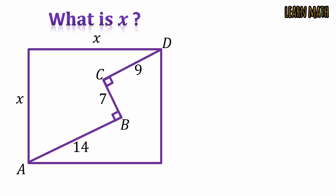In this question we have to find the side of the square that is x. Extend AB to the point E where BE is equal to CD that is 9. Similarly, draw the line ED that is parallel to BC.